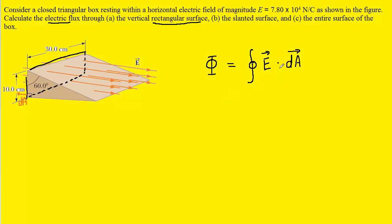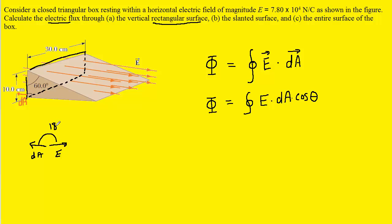We return to the dot product and recall that it can be rewritten to help us evaluate the integral. It can be written as the product of the magnitude of the electric field and the area vector, multiplied by the cosine of the angle between those two vectors. Going back to the drawing, the area vector is pointing to the left and the electric field vector is pointing to the right, so the angle between them is 180 degrees. The cosine of 180 degrees is negative one, so we make that substitution.